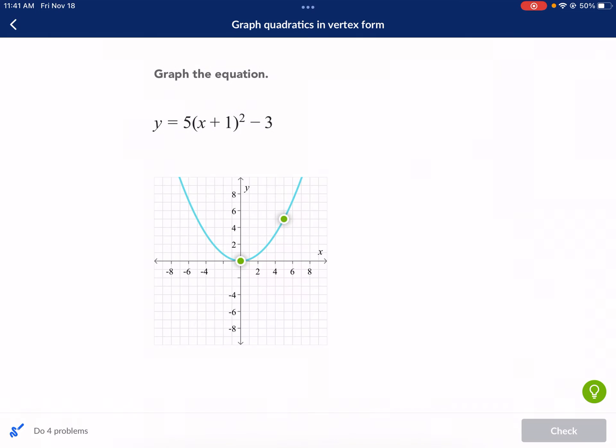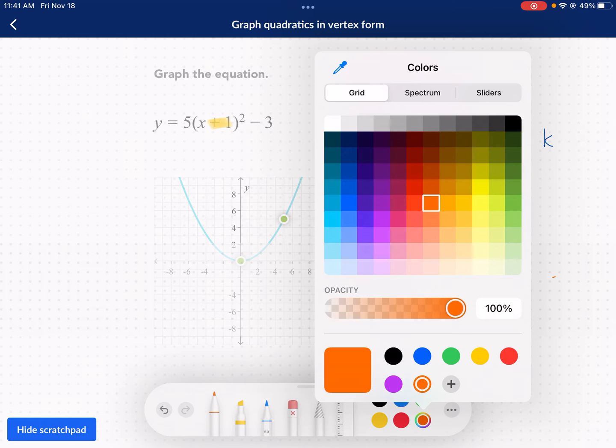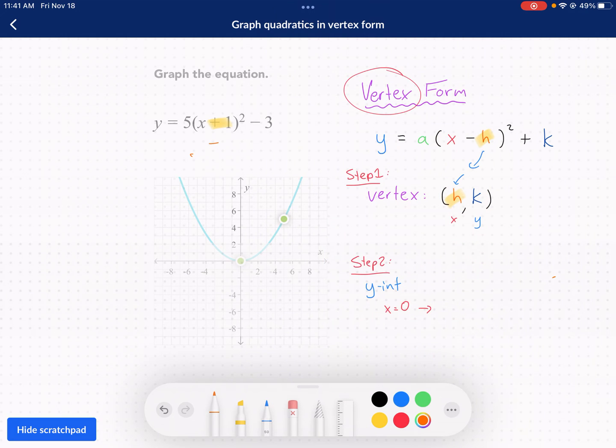So step one of this one is we want to identify what is h and what is k. So we're going to look here, and we see that h is a negative 1. I know what you're thinking. It says plus 1 there. Why are you saying that it's a negative 1? It's a negative 1 because we see here that it's in the form of x minus h. So if it says plus, that means it's minusing a negative 1.